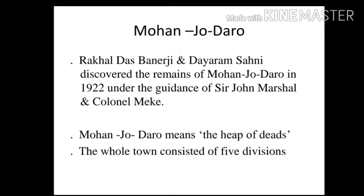Mohenjo-daro and Harappa are considered the best examples of ancient town planning. Mohenjo-daro was discovered in 1922 by Indian archaeologists Rakaldas Banerji and Dayaram Sahni, under the guidance of Sir John Marshall. Mohenjo-daro was situated in Larkhan district, which is today in Pakistan. The meaning of Mohenjo-daro is 'the heap of the dead.'